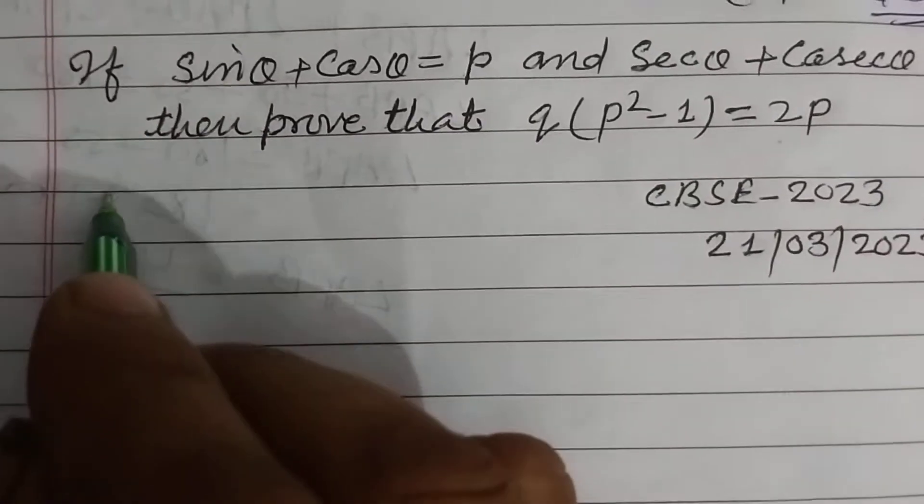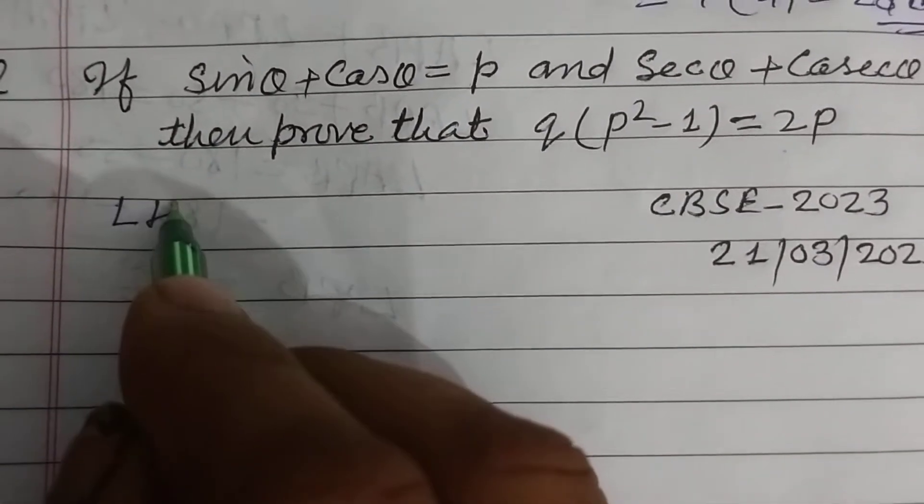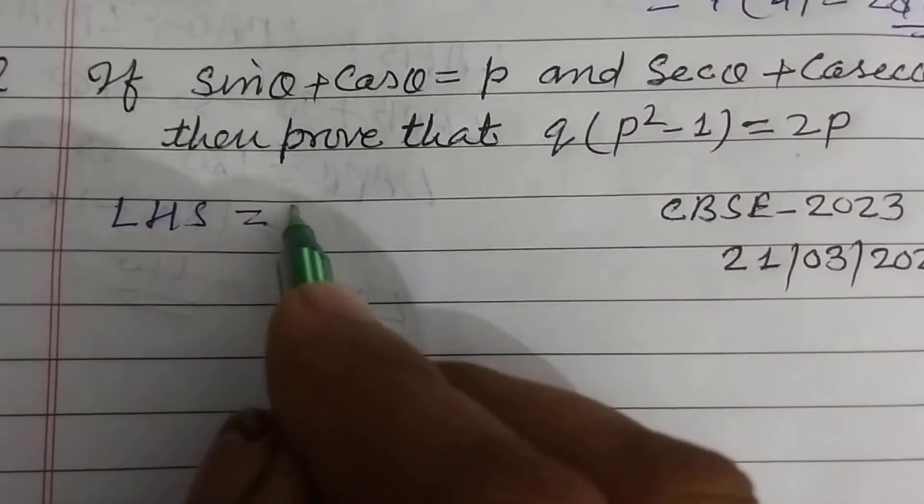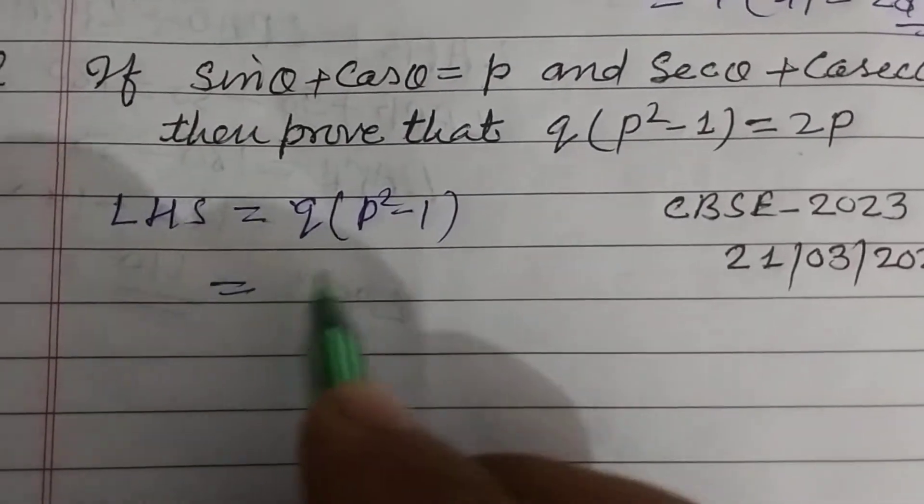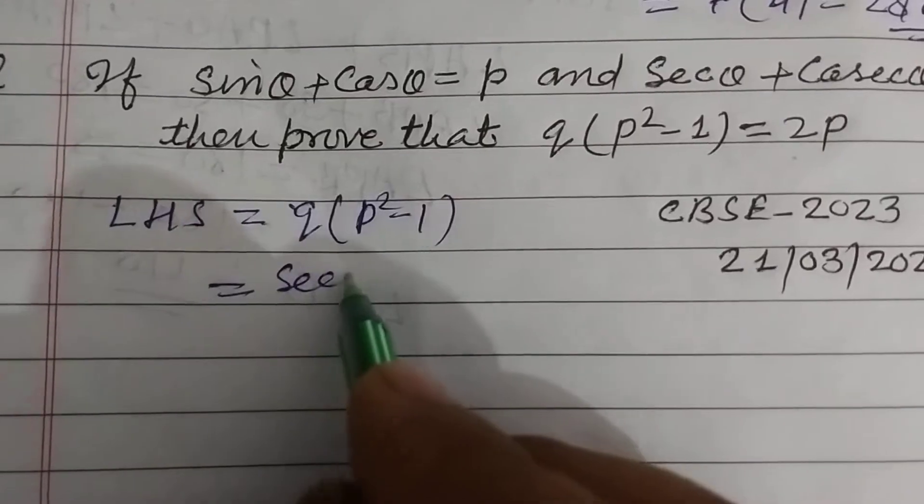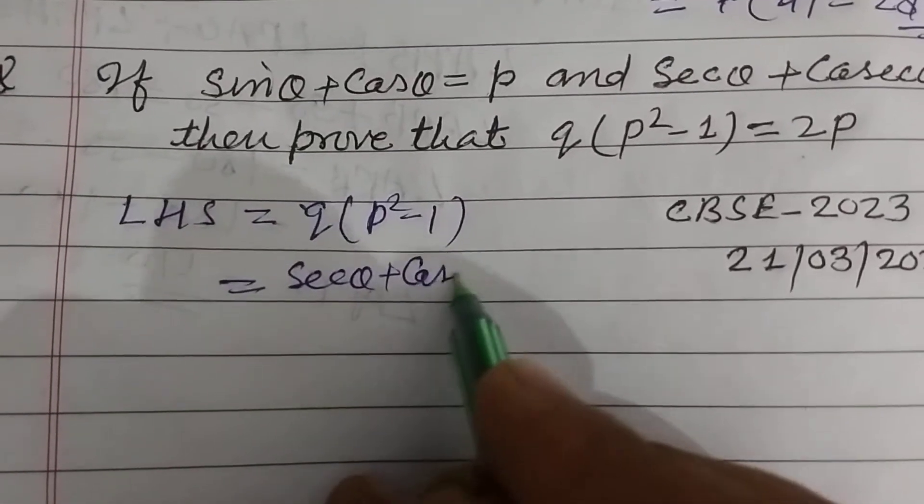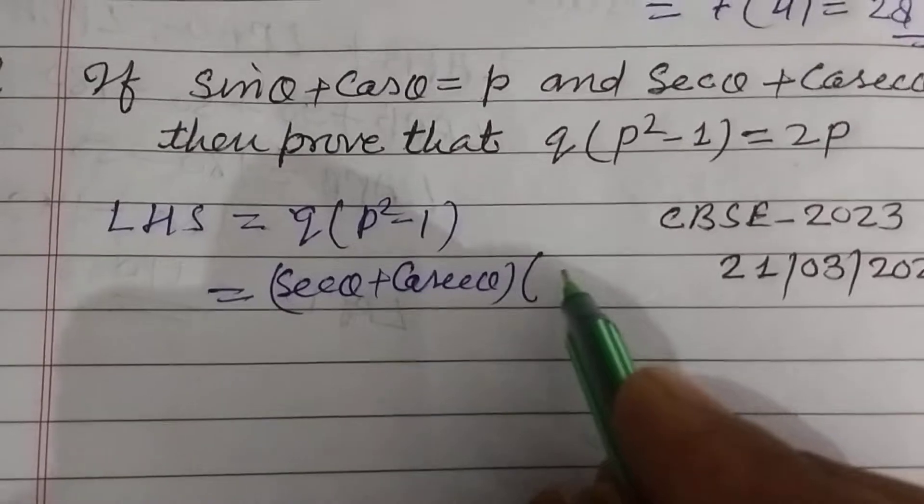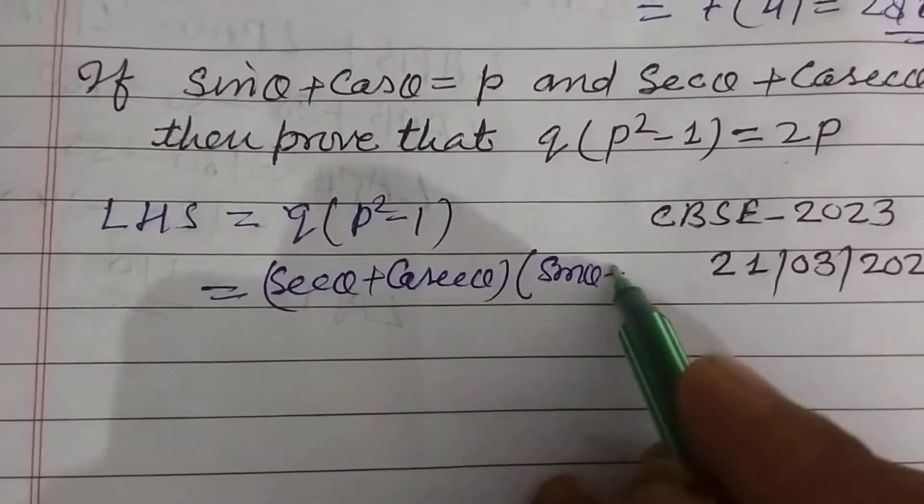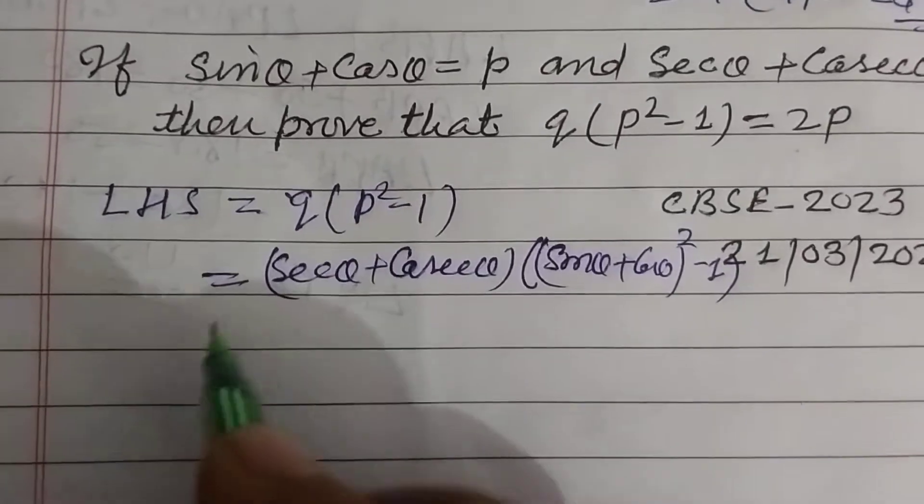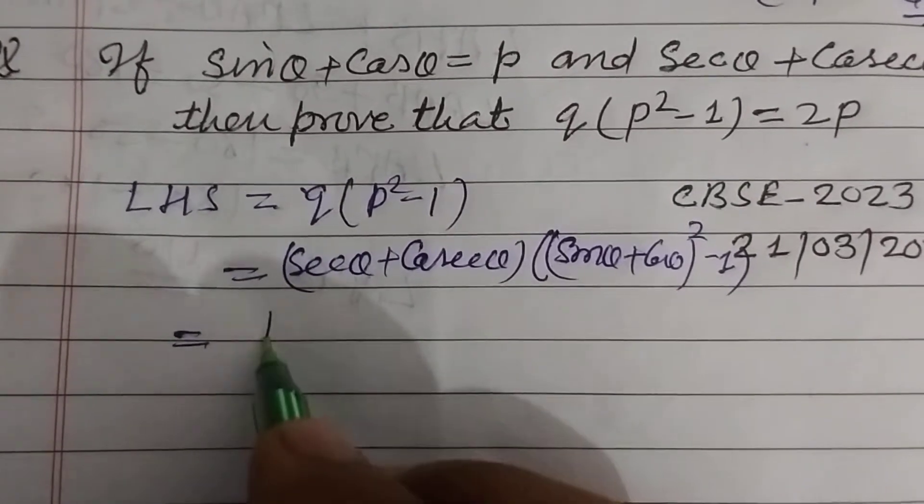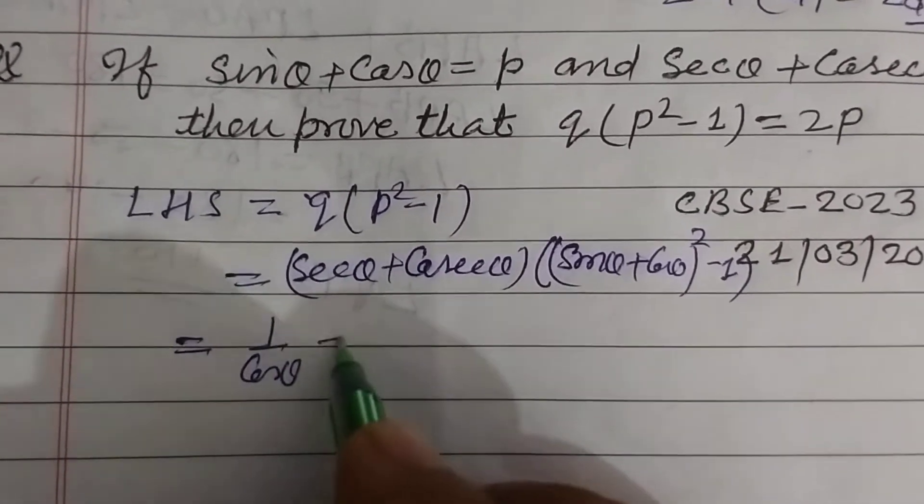So we first take LHS. q into p squared minus 1. q is sec θ plus cosec θ into p is sin θ plus cos θ whole square minus 1. Now we change it: 1 upon cos θ, 1 upon sin θ.